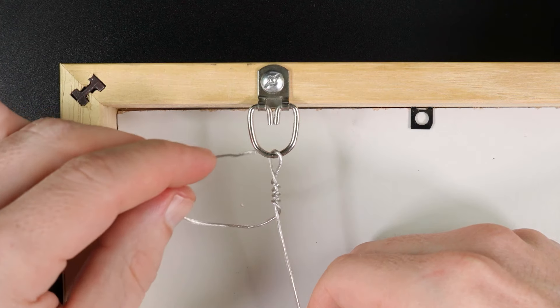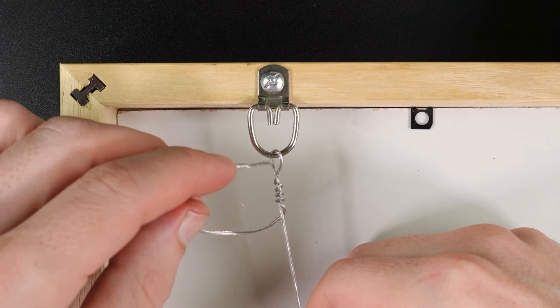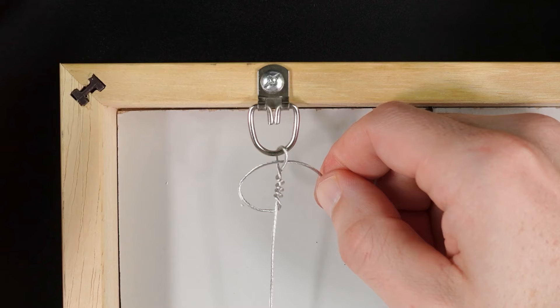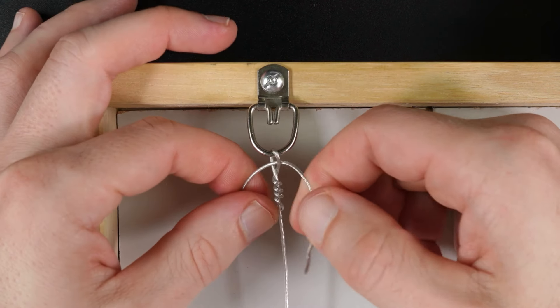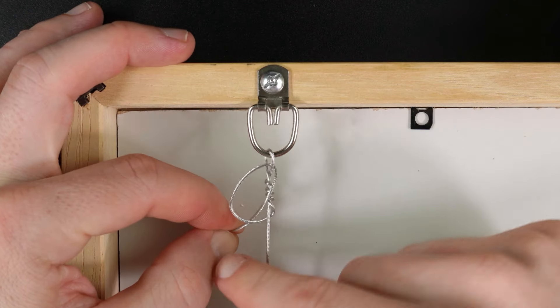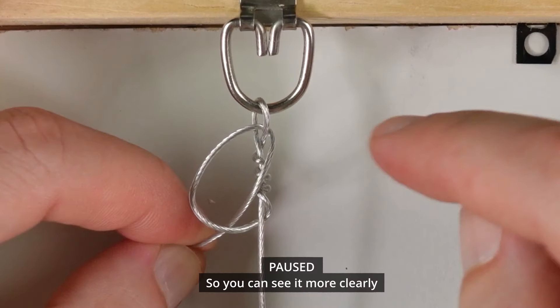And then you just take the end of the wire and you see this loop at the top that you just created? You just put it through the end of that. And this right here would be the clinch knot. The improved clinch knot is when you take the end and you put it through the loop you just made. And what that does is when you tighten this up, it'll close down on this end and it makes it more secure.